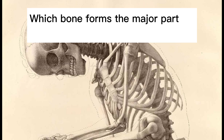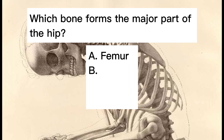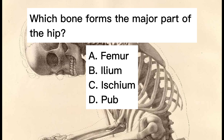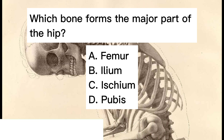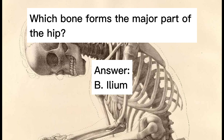Which bone forms the major part of the hip? A. Femur. B. Ilium. C. Ischium. D. Pubis. Answer: B. Ilium.